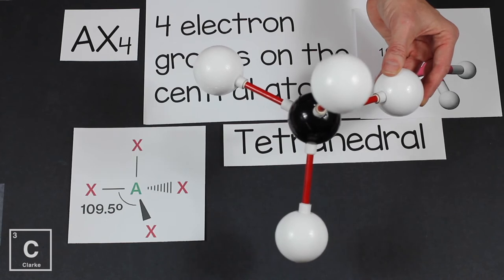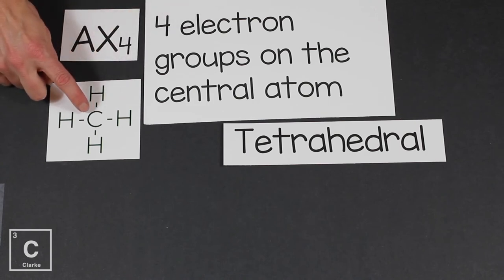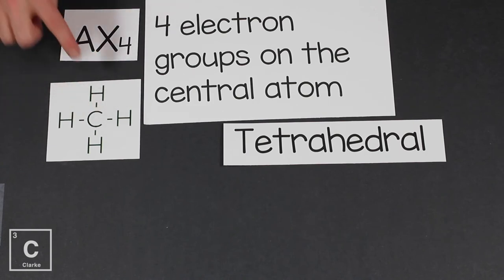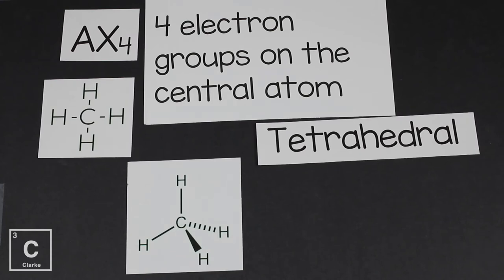The prefix tetra should sound familiar — it was the prefix for four when writing formulas for molecular compounds. A compound that makes a tetrahedral shape is carbon tetrahydride — tetra, four hydrogens. One central atom, four bonded atoms. If we were drawing the Lewis dot structure, we'd put carbon in the center and hydrogens on the outside. But now we know those electron groups repel each other, so they get into the tetrahedral shape, showing one hydrogen coming out of the page and one going back through the page.